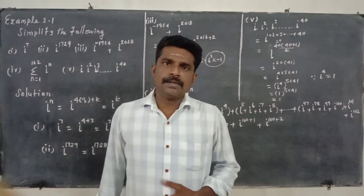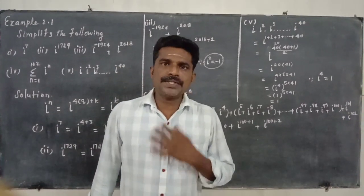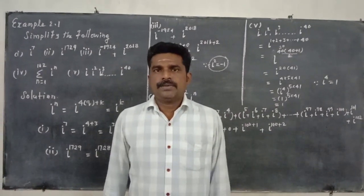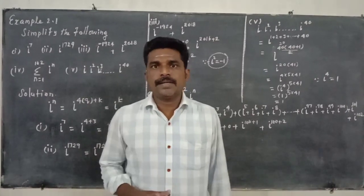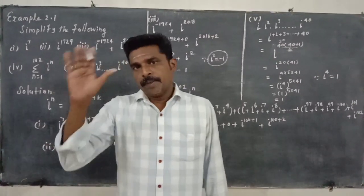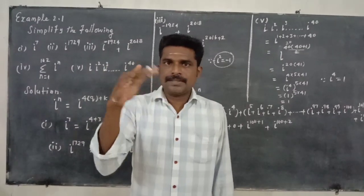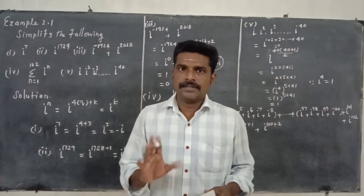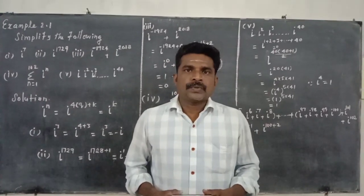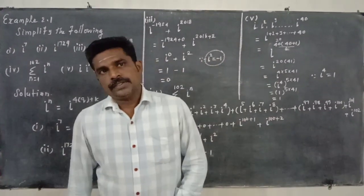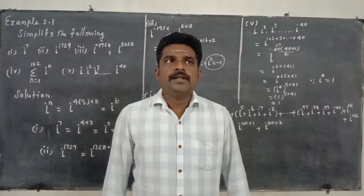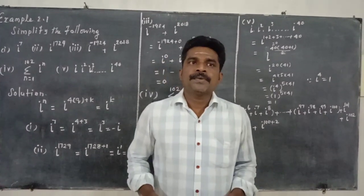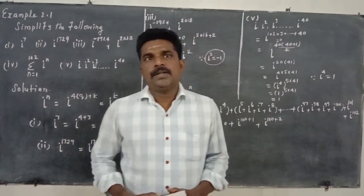So basically, for powers of the imaginary unit, if you have i power n, split the exponent into multiples of 4 plus the remaining part — the remaining part gives the answer. That is how these problems are solved.